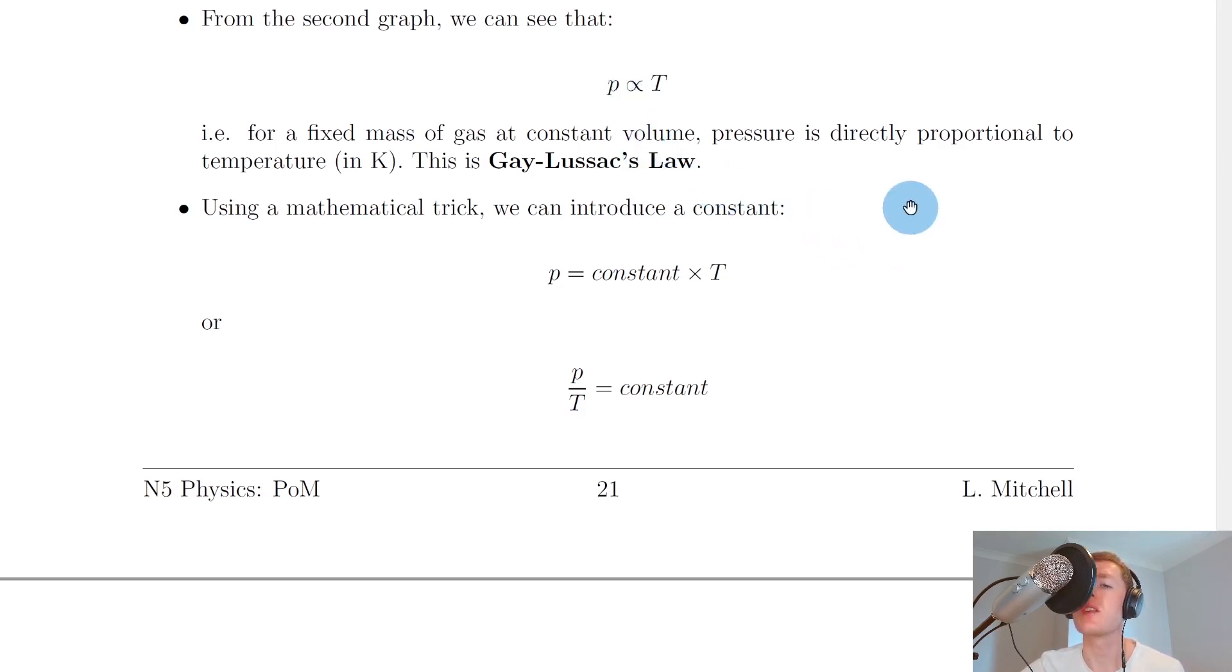Now what we're going to do is, just like we did for Boyle's law, we're going to take our law in symbol form and convert it into an equation. We can use a mathematical trick to introduce a constant, just like we did for Boyle's law. So we can say that if we've got P is directly proportional to T and we want to get rid of this proportional to sign, then we can replace this with an equals sign as long as we multiply the thing on the right hand side by a constant. So we end up with P equals a constant times T.